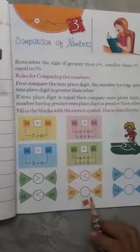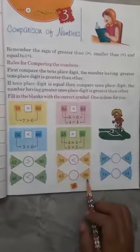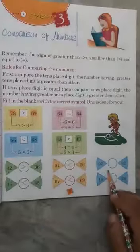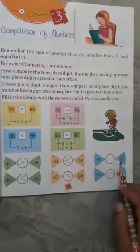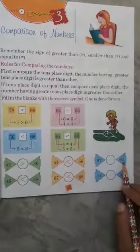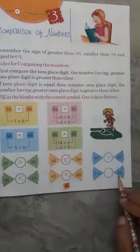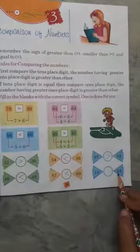67, 69 - 6, 6 is equal. Between 7 and 9, 9 is greater. 97, 92 - 9 and 9 are equal. 7 and 2 - 7 is greater than 2. So the sign in this way.